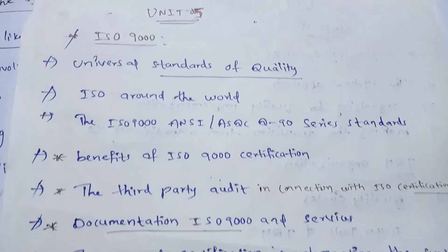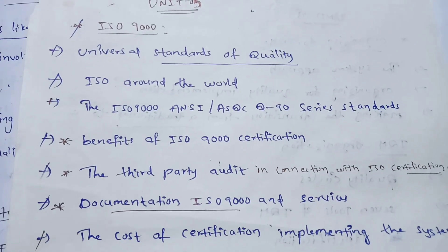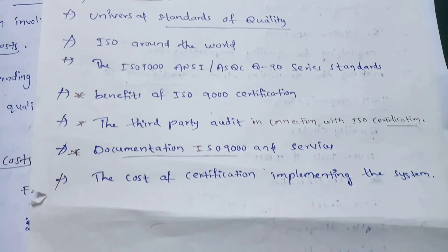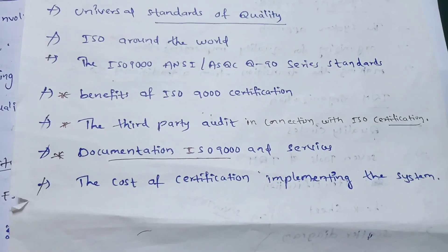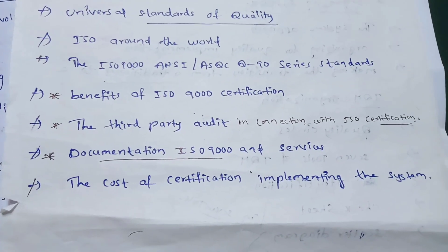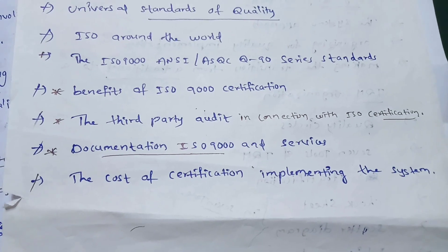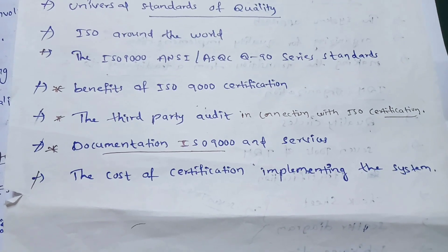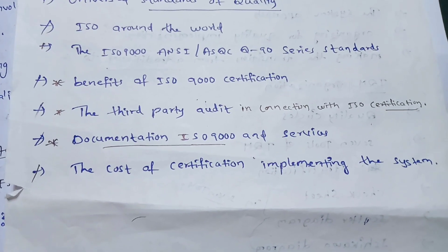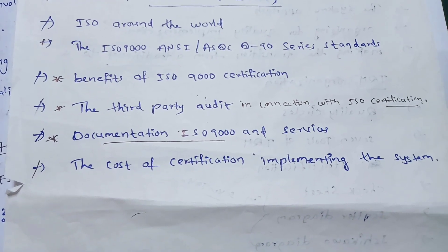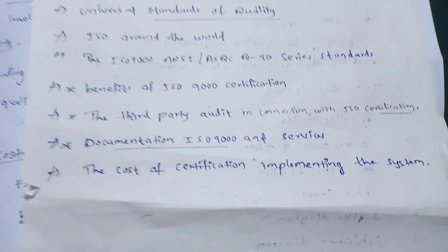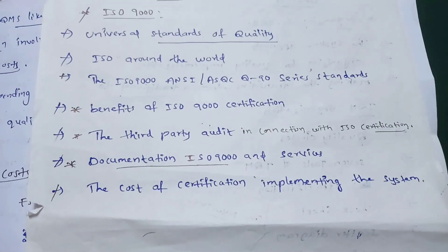Unit four topics include ISO 9000, universal channels of quality, ISO around the world, ANSI and ASQC equivalent series standards, benefits of ISO 9000 certification, third-party audit, documentation, ISO 9000 and services, and the cost of certification and implementing systems.